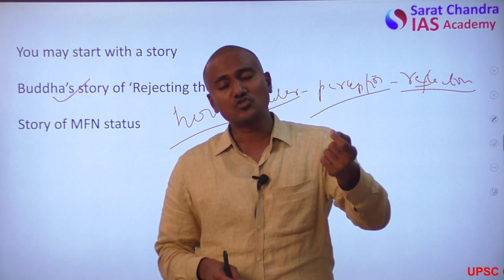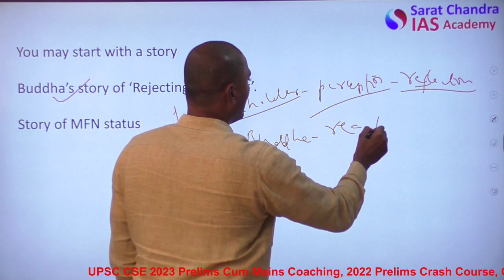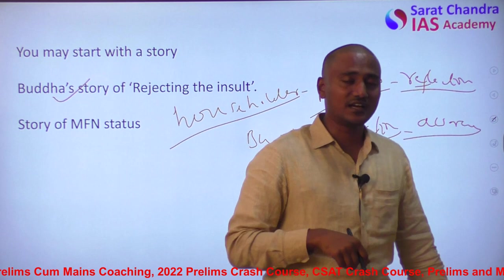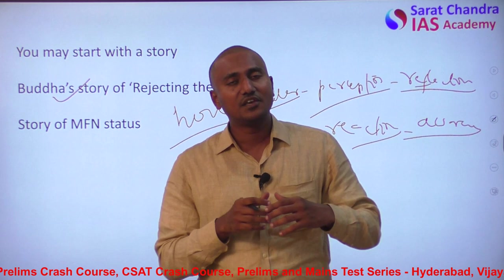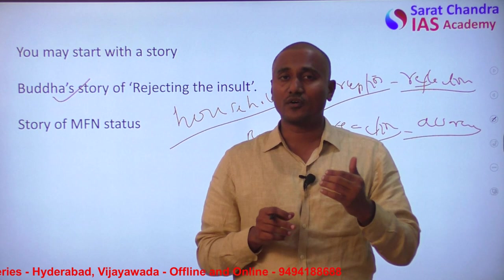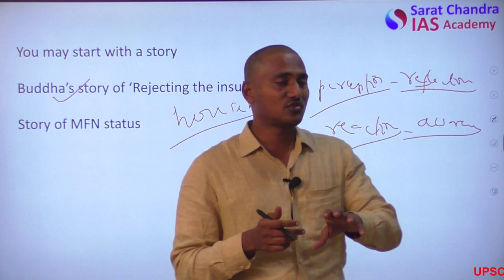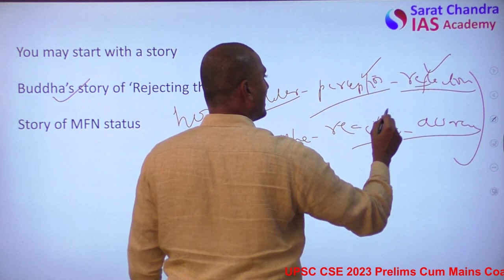Now for the second statement — let us see how Buddha reacted. That householder started insulting Buddha. Buddha's reaction reveals his awareness levels. His reaction was: 'If somebody gives a gift to me and I take it, the gift becomes mine. But if I reject the gift, it stays with you. Similarly, whatever scolding or insult you are trying to give me, I am not taking it — so it stays with you.' This reaction of Buddha shows his awareness. Through this example I explain both how perception is a reflection and reaction is an awareness.